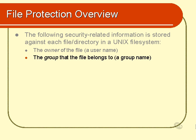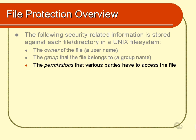There's also a group that the file belongs to, which means all members of that particular group have a particular set of permissions over that file, and no members of any other group have any permissions over that file. Thirdly, there are a set of permissions that various parties have to access the file. We are going to learn more about permissions in much greater depth in this chapter.